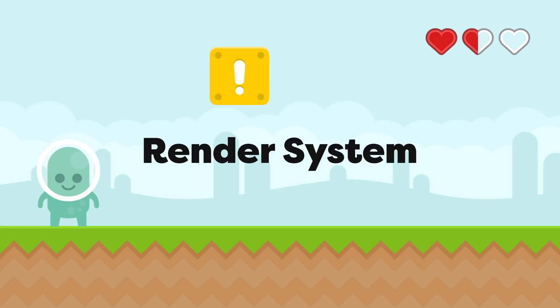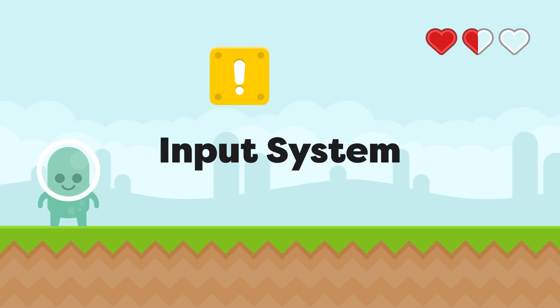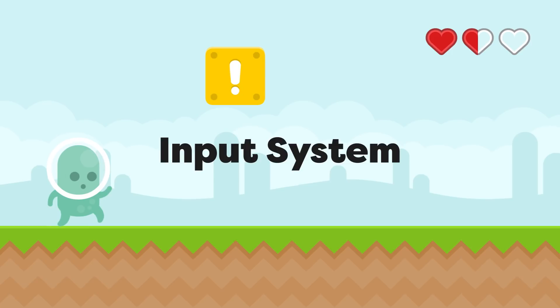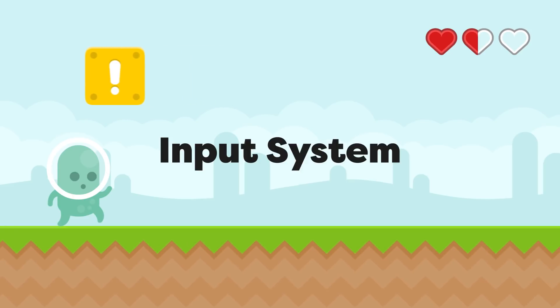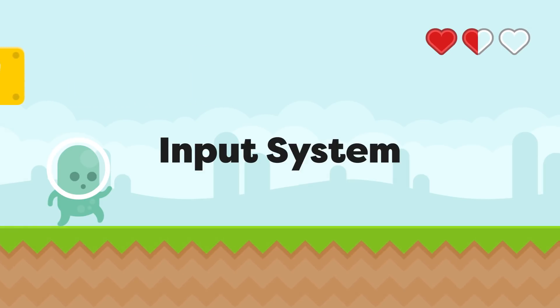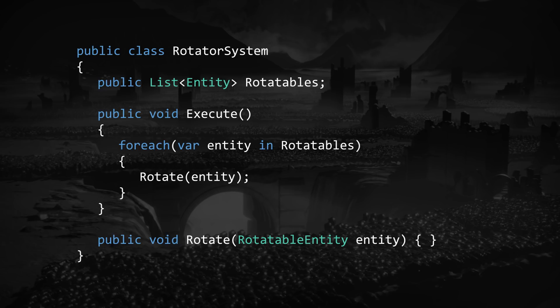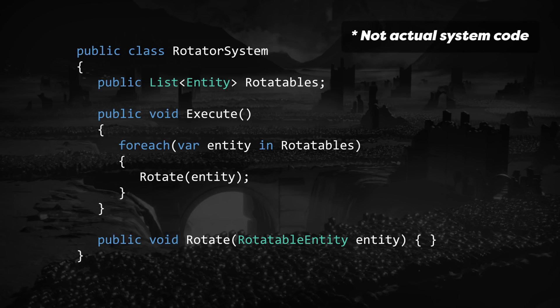And if we added another system, called Input System, that acted on entities with a physics and input component, then we could actually begin to control the player entity. That's basically how entity component systems work. Your logic lives in systems that define behavior for entities that contain only the components that those systems care about. This is just as true for a system that operates on a single entity as it is for one that iterates over hundreds of entities.